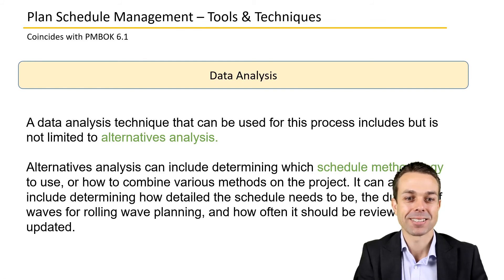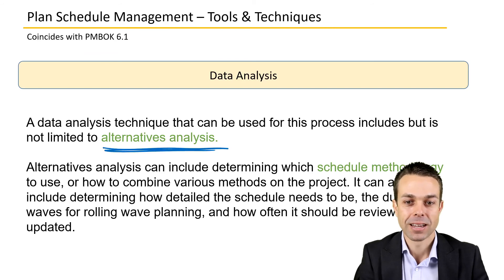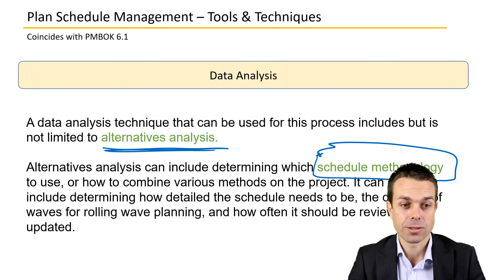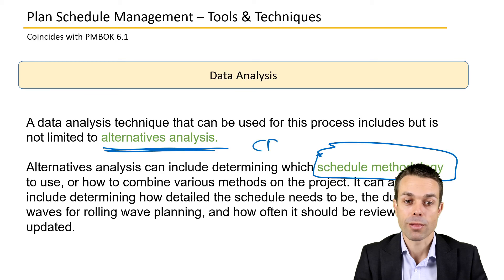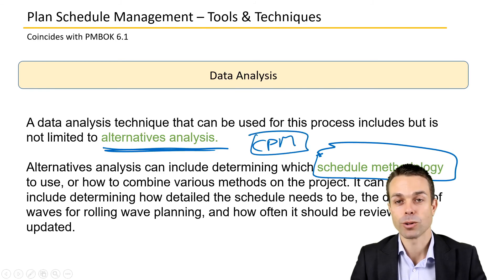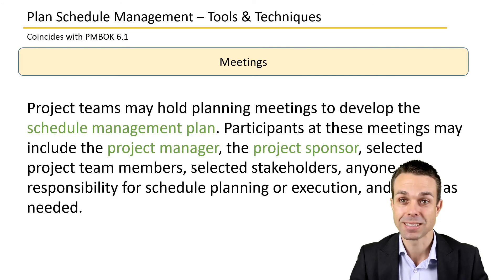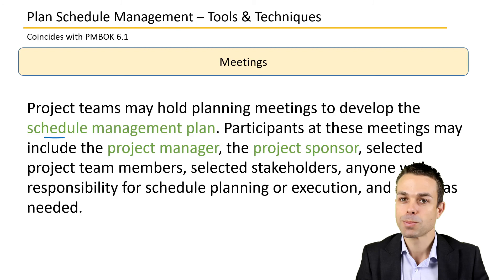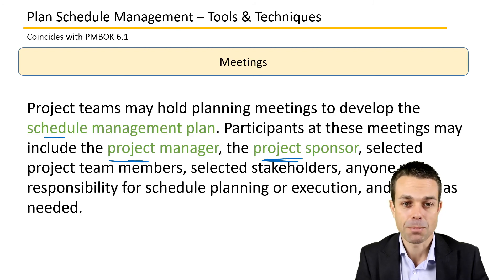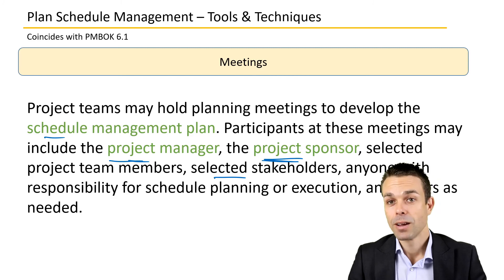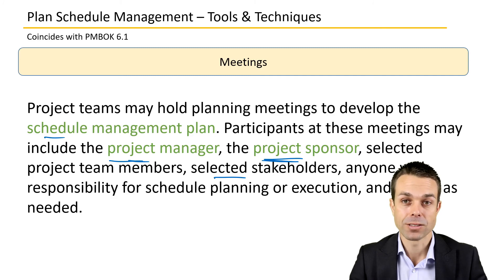A data analysis technique used for this process is alternatives analysis — determining which schedule methodology to use or how to combine various methods. Maybe we want to use agile, maybe the critical path method; either way we need to evaluate a few alternatives and pick the best one for this particular project. Meetings are also essential for gathering and dispersing information. Participants may include the project manager, project sponsor, selected team members, stakeholders, or anyone responsible for schedule planning or execution — meetings are often the fastest way to reach consensus.